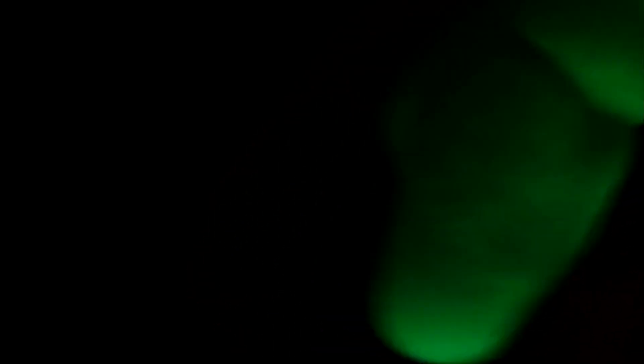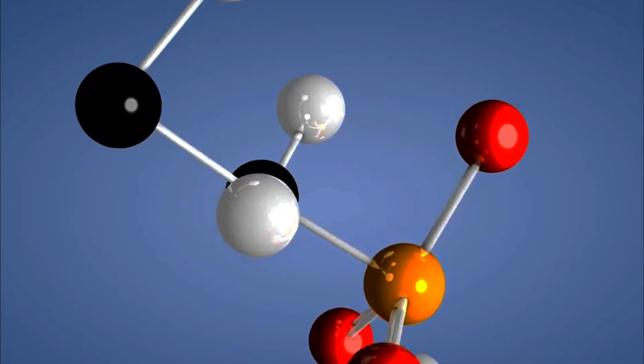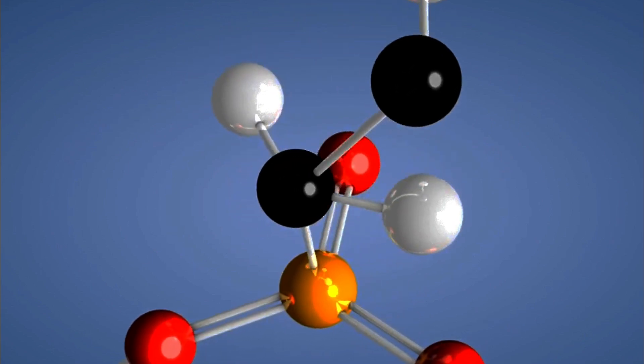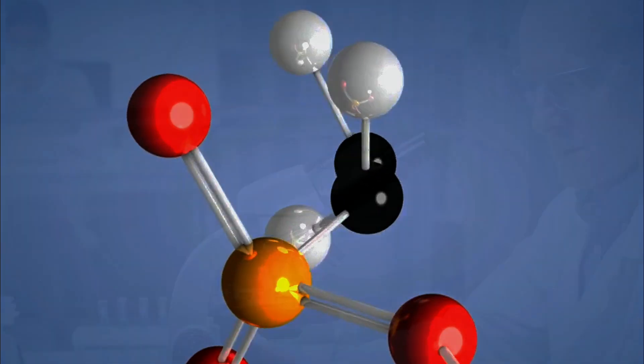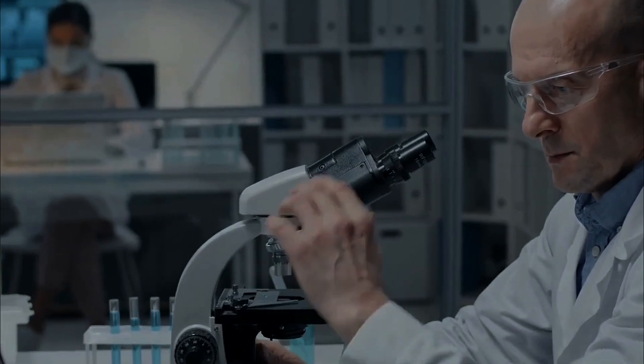When you touch something, what you're feeling is the electromagnetic repulsion between the atoms in your skin and the atoms in the object. This fascinating phenomenon is a cornerstone of quantum mechanics and helps explain why the concept of touch is more complex than it seems.